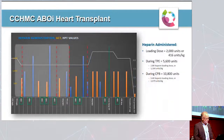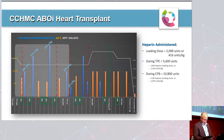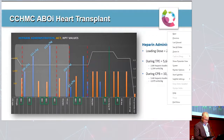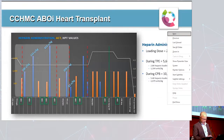Looking at heparin administration specifically, the patient's loading dose was 416 units/kg or 2,000 units based on the HMS slope. The patient was given an additional 5,600 units of heparin during the TPE period — 2.8 times the loading dose. During the entire bypass period, the patient received 10,800 units total including the loading dose — 5.4 times the loading dose — equaling approximately 2,100 units/kg on a 4.8 kg patient. That's a whopping dose of heparin.